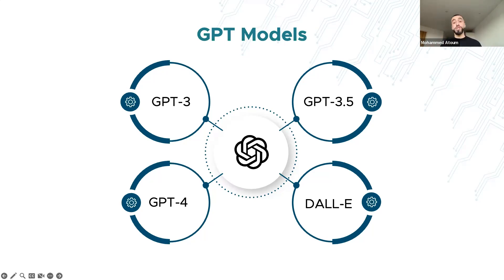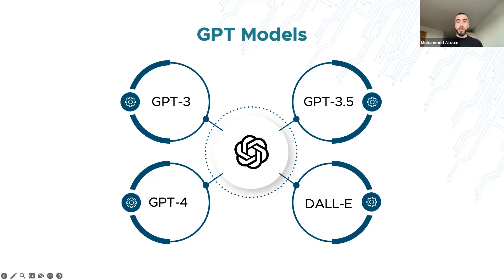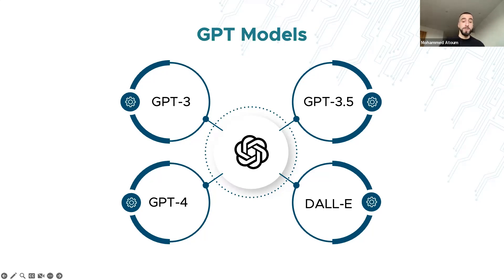GPT-4 is the newest and most powerful model, and it is multimodal — meaning it can accept both text and images as inputs. Released in March 2023, it's the most capable of all the models. You can upload a worksheet and it will output all questions and responses, or upload a graph and it can make calculations based on the data presented. It has higher capabilities for understanding and generating code, translating languages in real time, and writing creative content.